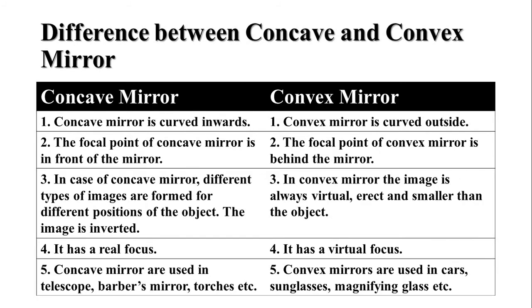Now let us know what are the differences between concave and convex mirrors. You can see a table on your screen. In this table, the major differences between concave and convex mirrors are displayed. First, concave mirror is curved inward while convex mirror is curved outside. Second, the focal point of the concave mirror is in front of the mirror while the focal point of the convex mirror is behind the mirror.